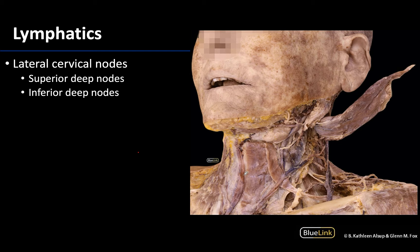These deep lymph nodes are closely associated with the internal jugular vein, and you can see a little bit of your IJ, or your internal jugular vein, here. I really like this image because it is showing the carotid sheath region, and you can see a little bit of the sheath right here and right here. You can see it without it being a deeper dissection, which usually necessitates the carotid sheath being removed, so you can see kind of where that is located here.